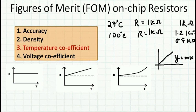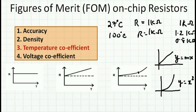Temperature coefficient can be linear or square law. A linear curve follows y = mx, while a square law follows y = x². Generally resistors have a combination of both — a linear portion up to a certain temperature, then nonlinear behavior. The nonlinear component is small for lower values but increases significantly at higher temperatures.